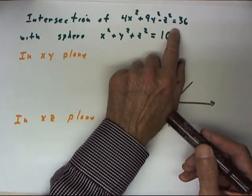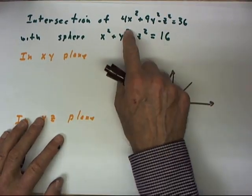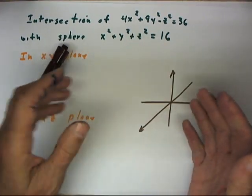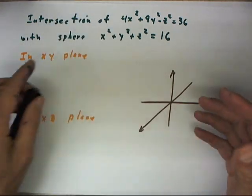And we intersect with the surface that we looked at earlier. This surface being a hyperboloid.